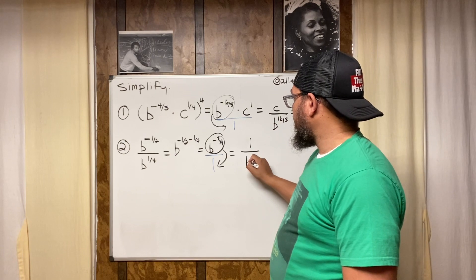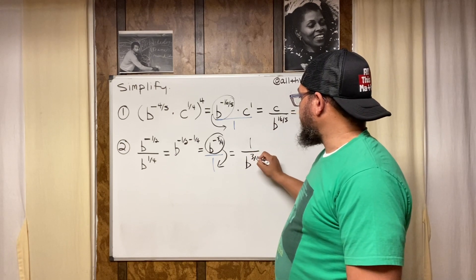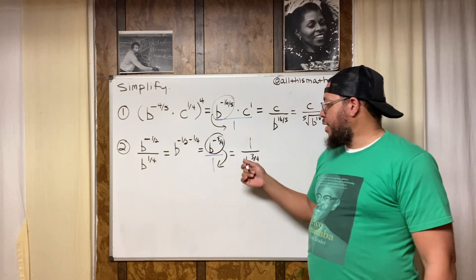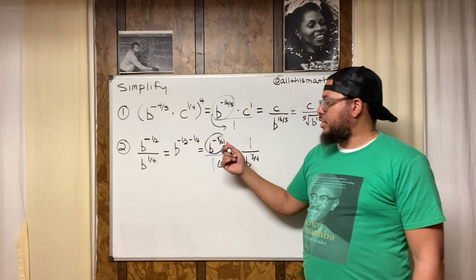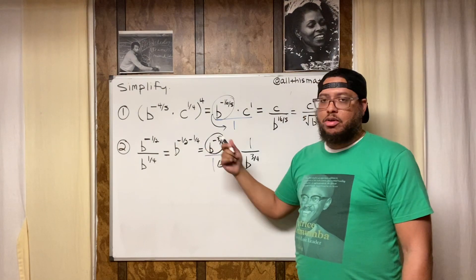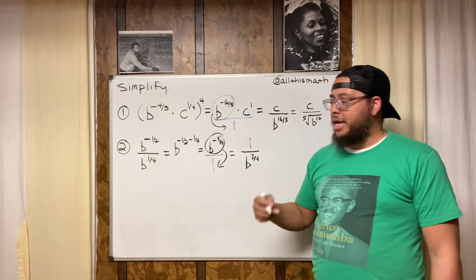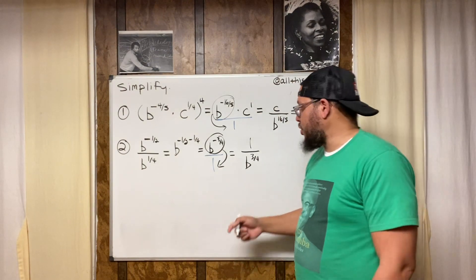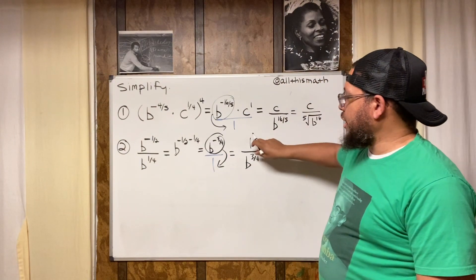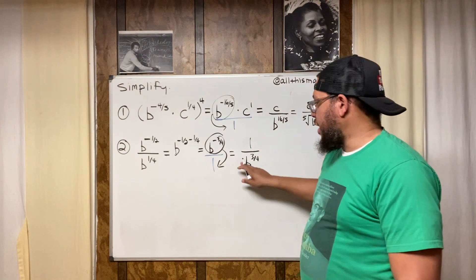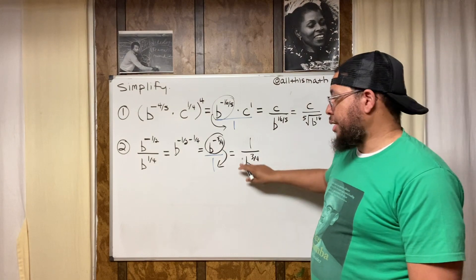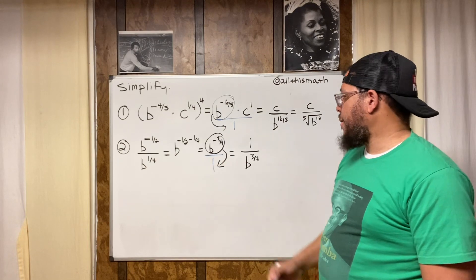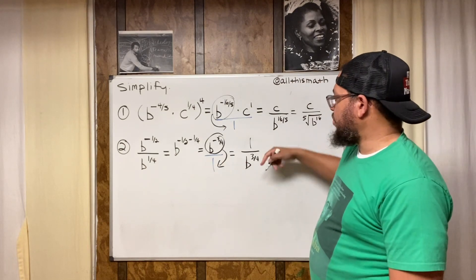We get b to the positive three-fourths in the denominator. You could think of it as an infinite number of ones multiplied as coefficients — they all have a product of one. Our final answer is one over b to the three-fourths. In radical form, that becomes one over the fourth root of b to the third.